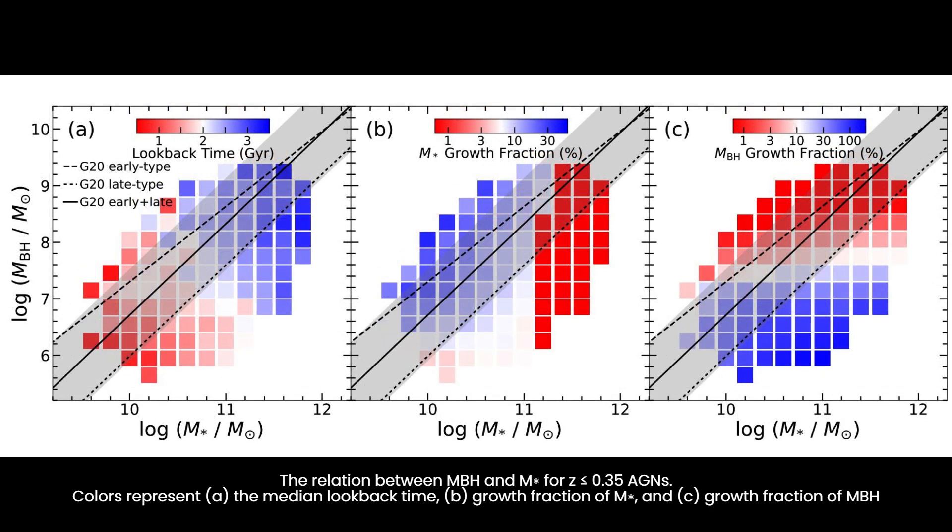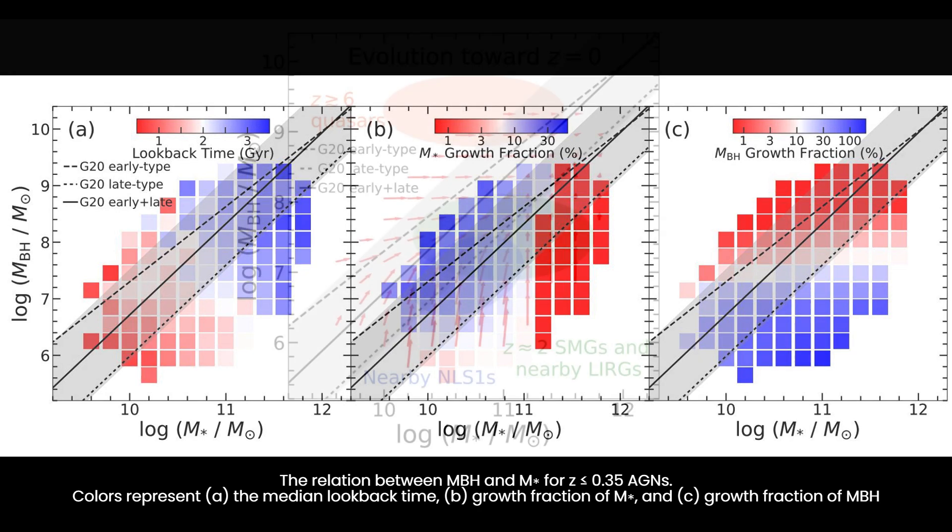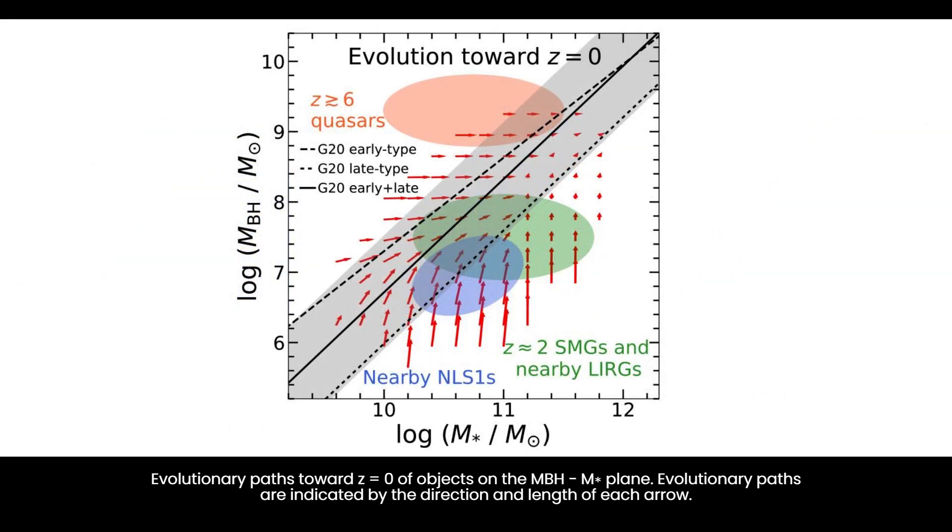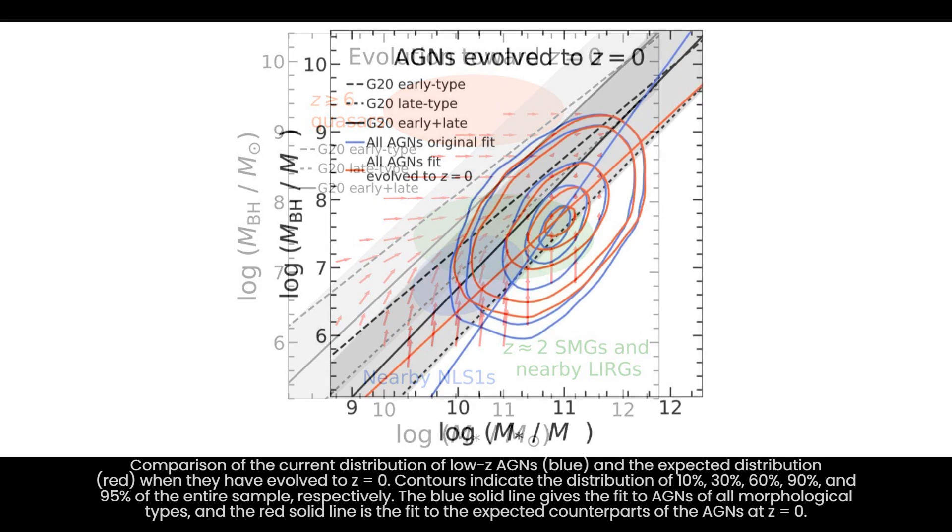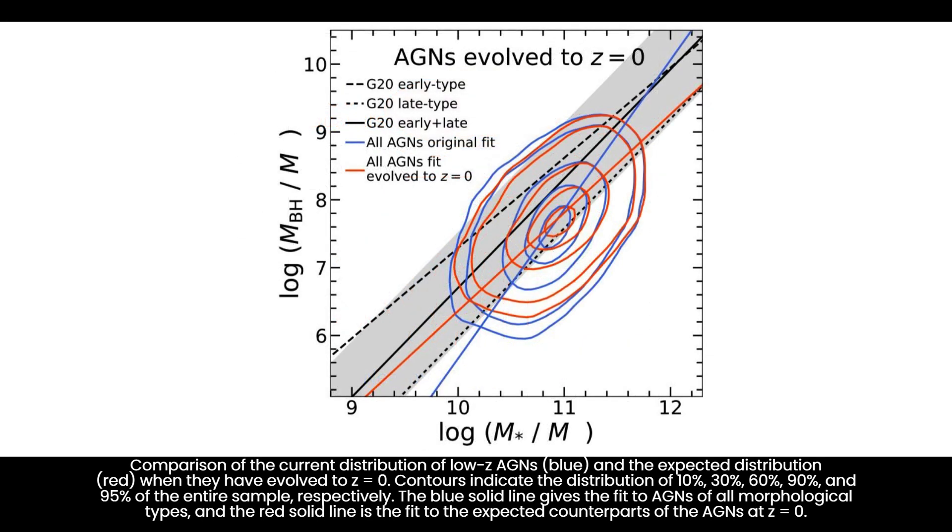This cosmic connection persisted steadfastly, irrespective of the unique characteristics of the galaxies. But what propels this synchronized cosmic narrative? It appears to be the presence of a shared cosmic reservoir, a common gas supply that fuels both star formation and black hole accretion.